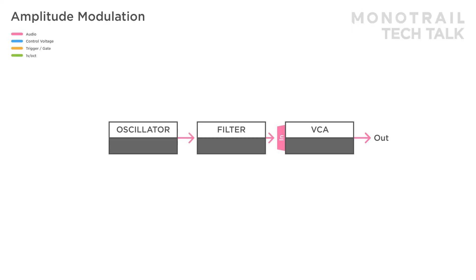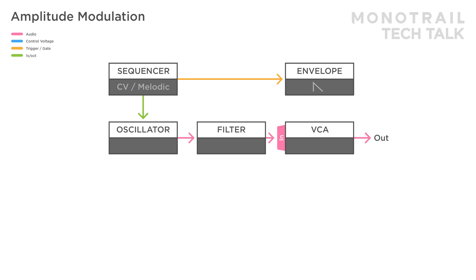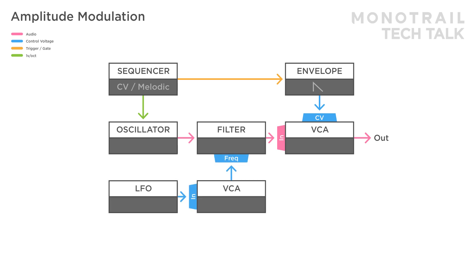AM stands for amplitude modulation, and you're using it anytime you use a voltage-controlled amplifier to control the amplitude of a signal. For example, here you see a simple oscillator-filter-VCA synth voice. When a keyboard or sequencer is used to gate an envelope and that envelope is modulating the VCA, that's amplitude modulation — the envelope is modulating the volume of the sound. Here's another example where an LFO is sent through another VCA before modulating the filter. When a second LFO is used to modulate that VCA, that's AM again — the second LFO is modulating the strength of the first LFO.